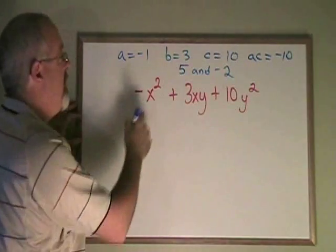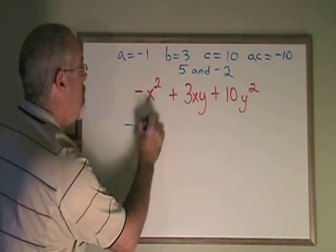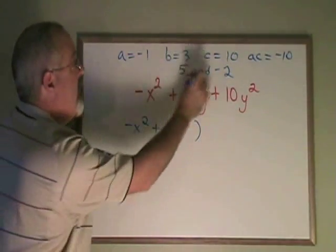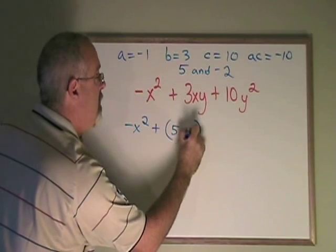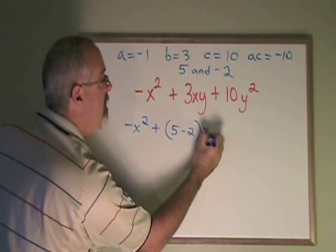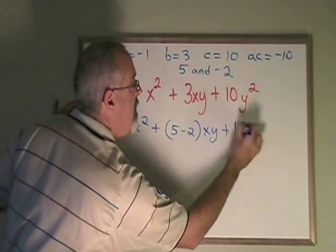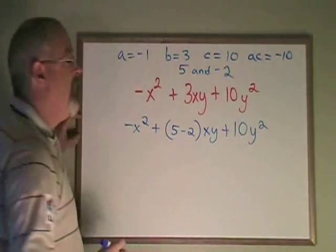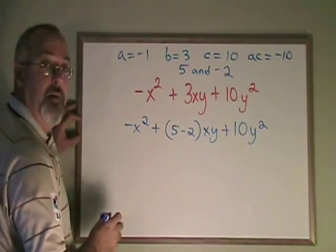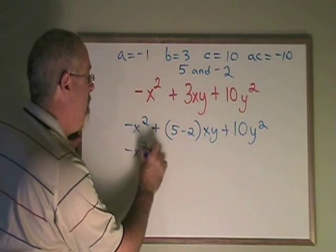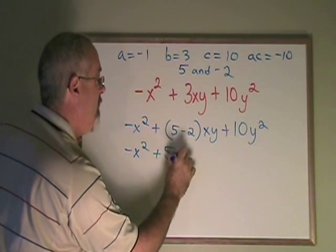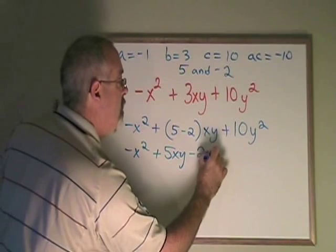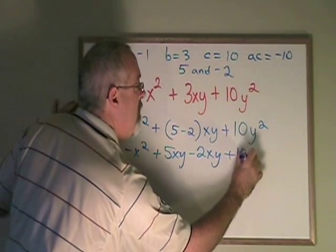Let's rewrite this expression. Negative x squared plus a bracket with 5 minus 2 in it. Then the xy plus 10y squared. If I break this bracket apart, I get negative x squared plus 5xy minus 2xy plus 10y squared.